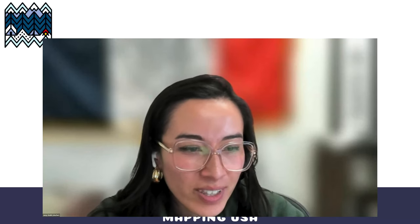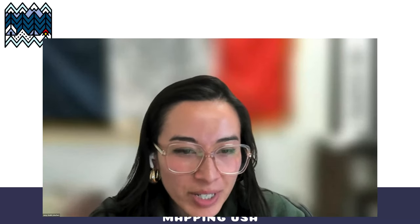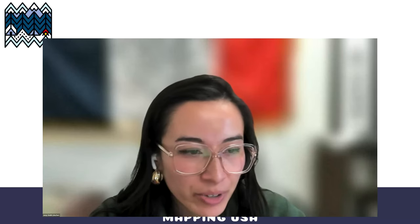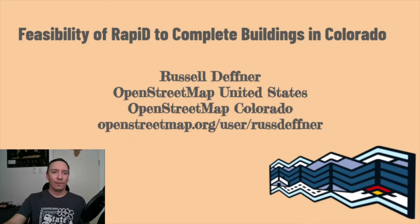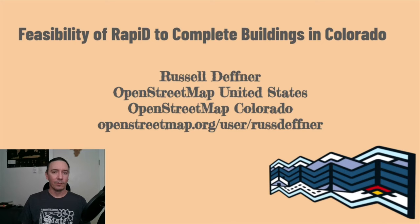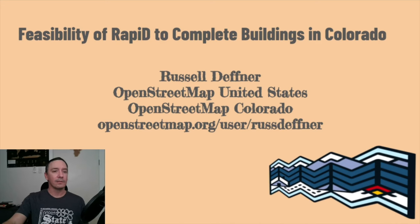We are going to move on to the last presentation of this segment, which will be a recorded presentation titled 'Feasibility of Rapid to Complete Buildings in Colorado' by Russell Deffner. Hello everyone, I hope you're enjoying the Mapping USA conference. I'm Russell Deffner, a longtime contributor and supporter of OpenStreetMap. I'm originally from Colorado, but I live part of the year in the Philippines where I am now, so forgive me for not being with you live as it's about 3 a.m. here. In this pre-recorded session, I'll explore various methods of mapping buildings and share my insights on their efficiency.